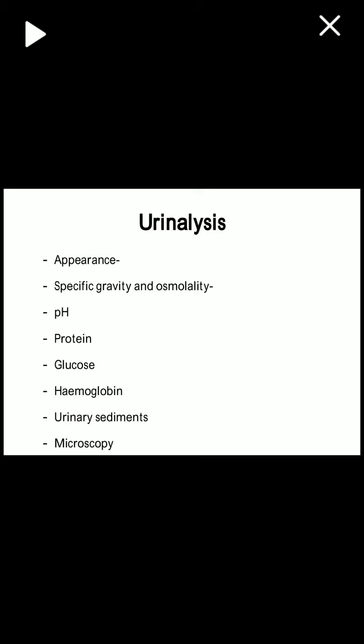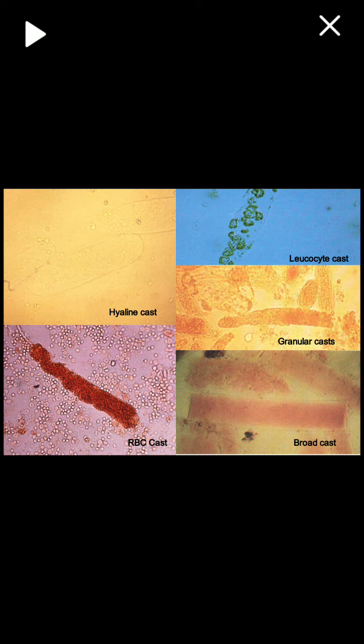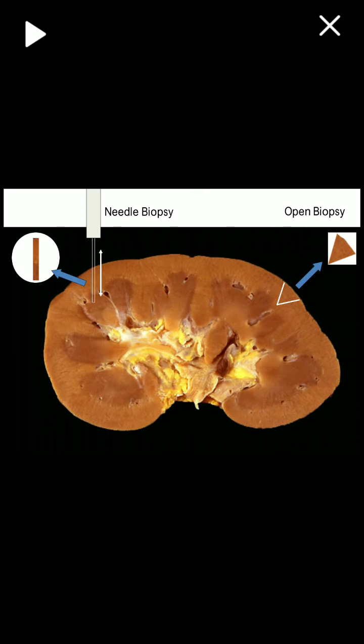Urine analysis examines appearance, specific gravity, pH, protein, glucose, hemoglobin, urinary sediments, and microscopy. Microscopic findings hinting at chronic kidney disease include hyaline casts, RBC casts, leukocyte casts, granular casts, and broad casts. Renal biopsy is also indicated in CKD to determine the exact cause of renal failure — whether the glomerulus, tubules, vasculature, or obstruction is responsible.